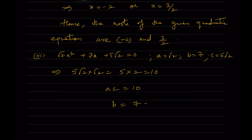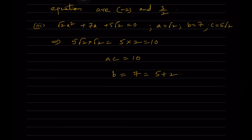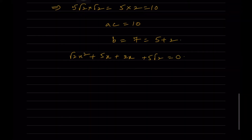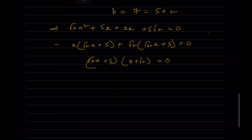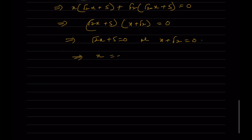Since 5 + 2 = 7, we write √2·x² + 5x + 2x + 5√2 = 0. Taking √2·x common from first two: √2·x(x + √2·... wait — we take √2 common giving (√2·x + 5)(x + √2) = 0. So √2·x + 5 = 0 or x + √2 = 0, giving x = -5/√2 or x = -√2.